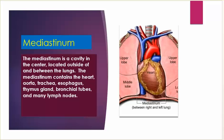Mediastinum: the mediastinum is a cavity in the center, located outside of and between the lungs. The mediastinum contains the heart, aorta, trachea, esophagus, thymus gland, bronchial tubes, and many lymph nodes.